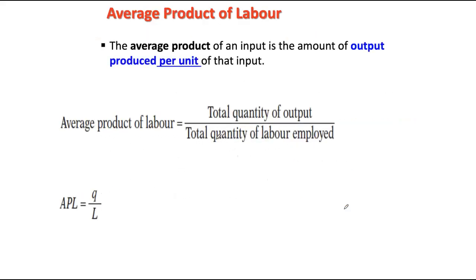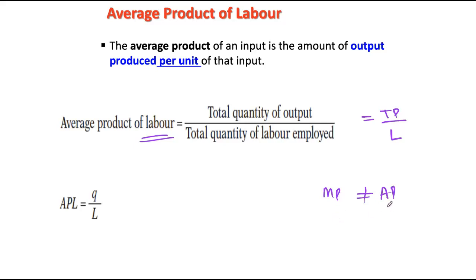Average product of labor is simply a measure of average productivity — total output divided by the number of workers employed. Marginal and average are not the same: marginal looks at the specific productivity of the nth worker — the 2nd, 8th, or 10th worker — whereas average productivity looks at the average output produced by the firm given some number of inputs hired. Do not confuse the two; they are completely different concepts.